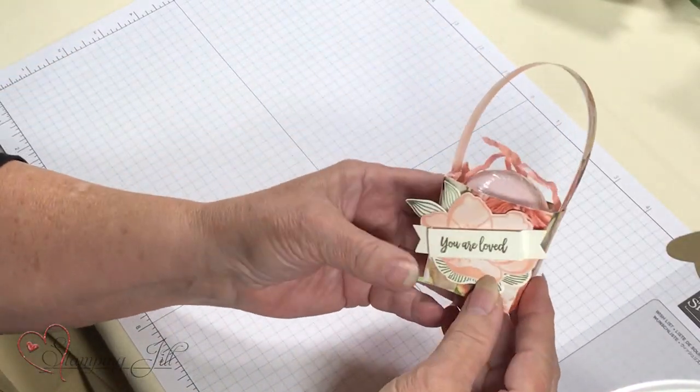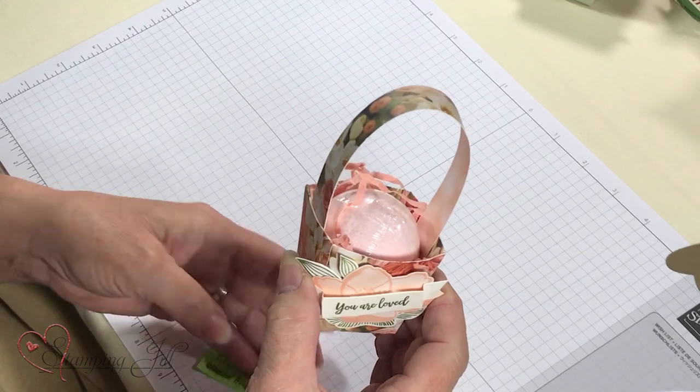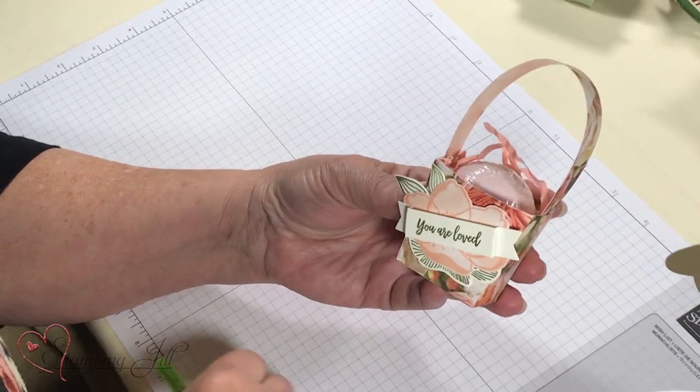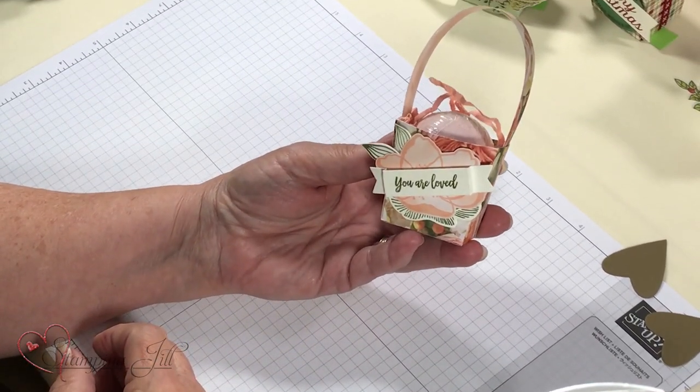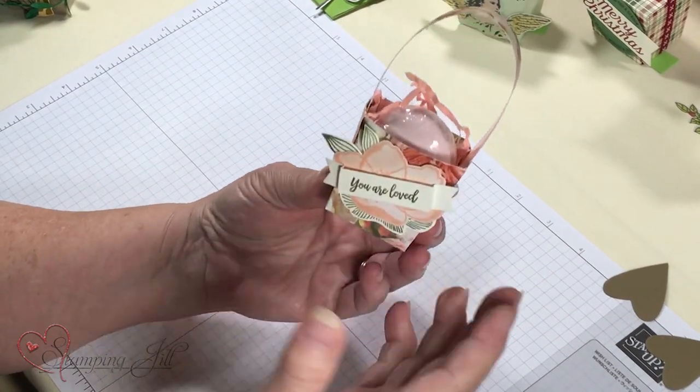I'm going to show you some. This is done with our, what's the paper called? Promenade. Pedal Promenade DSP and the beautiful Promenade set. So you just cut it out normal and it works best for me anyways.